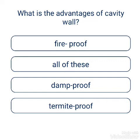Question: What is the advantage of a cavity wall? Options: fire proof, damp proof, thermite proof, all of this. The answer is damp proof.